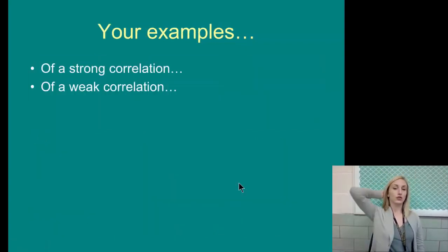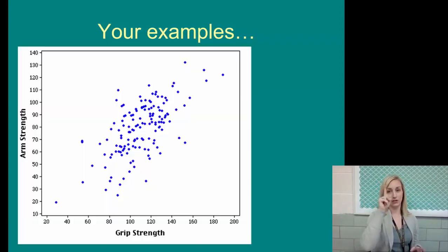So really quickly, a strong correlation is one where the variables are very related. So as height increases, weight increases. Those are very correlated. That is a strong correlation. There is a strong tie between those two variables.